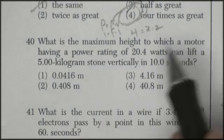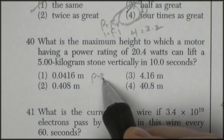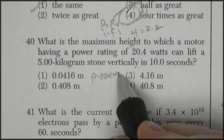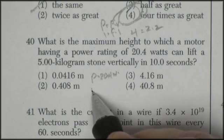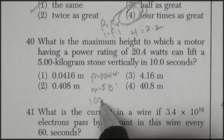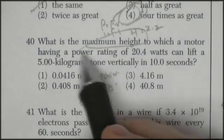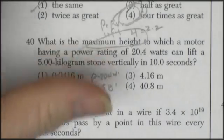Question 40. What is the maximum height to which a motor, having a power rating of 20.4 watts, can lift a mass of 5 kilograms, time of 10 seconds. And what's the maximum height? We're looking for height. Well, let's go find something.